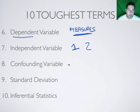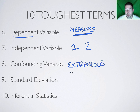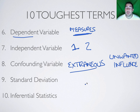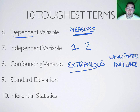The confounding variable — sometimes called an extraneous variable — is a variable that has an unwanted influence. For example, if I'm doing research on something political and I accidentally get a group of mostly conservative or mostly liberal Americans when I wanted a sample of all Americans, those would be confounding variables because conservatives tend to think one way and liberals tend to think another. That would be a confounding or extraneous variable in my research.